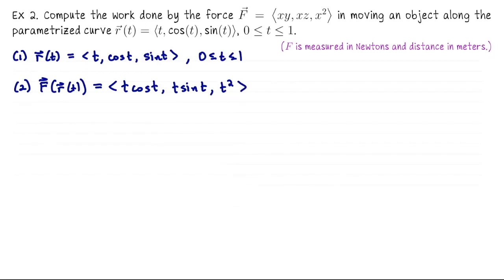Next we need the velocity vector, so let's compute r'(t). We get (1, -sin t, cos t). Now we can at least set up the integral. I might not finish the anti-differentiation by hand, but let's go ahead and write down how we would compute this work.